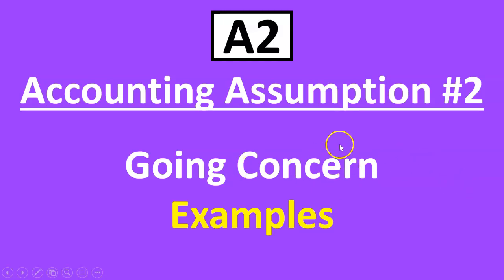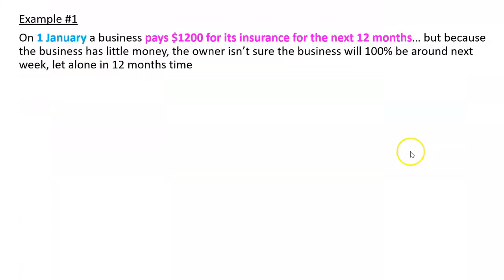Let's have a look at some examples of how we could apply the going concern assumption — accounting assumption A2, the second one. Let's take the first example. On the 1st of January, a business pays $1,200 for its insurance for the next 12 months.